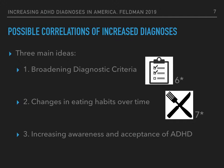The three possible correlations we'll be revealing in our research are: 1) the broadening of diagnostic criteria, 2) the changes in eating habits over time throughout America, and 3) increasing awareness and acceptance of ADHD. If we broaden the diagnostic criteria, it is easy to assume that more people will fit into that category. Multiple studies would also like to link diet and exercise, and general awareness and acceptance of all mental health disorders including ADHD may also be a possible correlation.